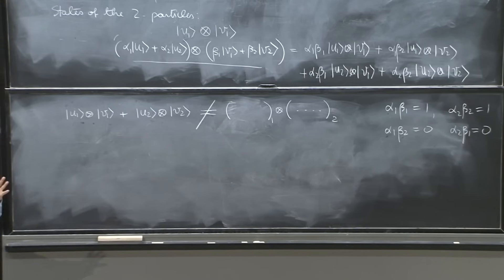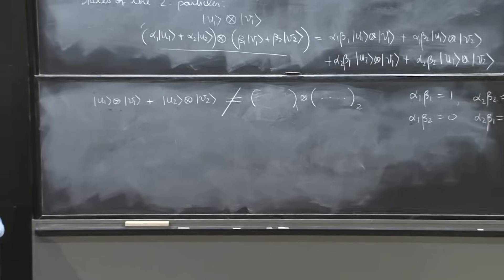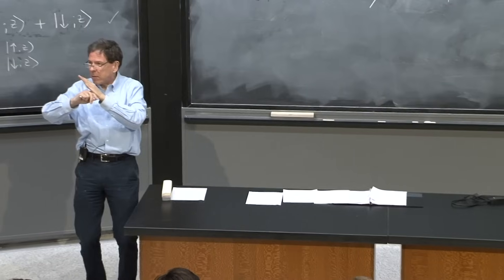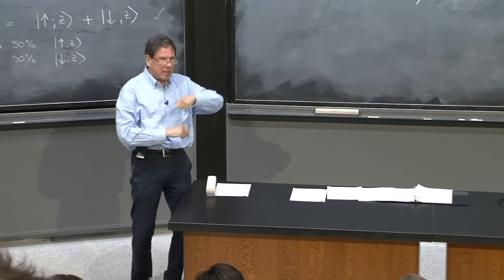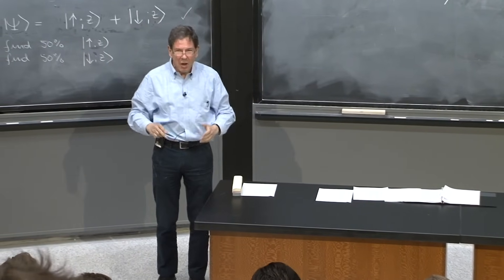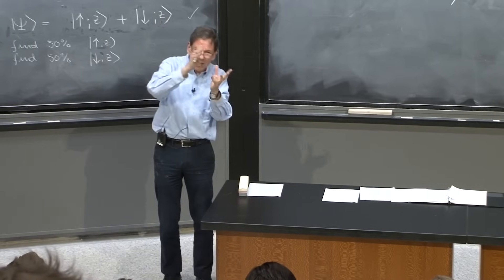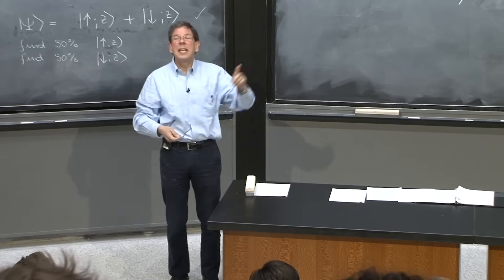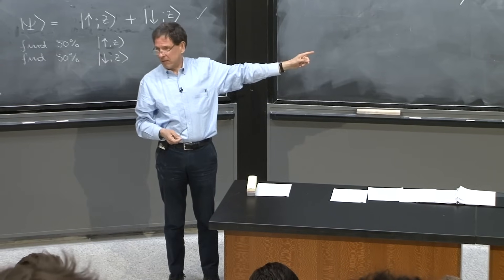It's a funny state in which you cannot say that this quantum state can be described by telling what the first particle is doing and what the second particle is doing. What the first particle is doing depends on the second, and what the second is doing depends on the first. Because this is an entangled state.